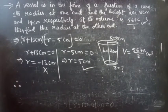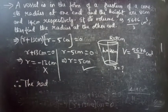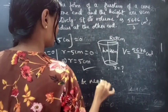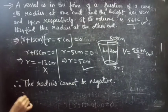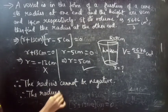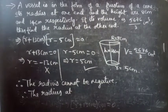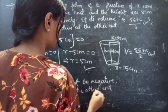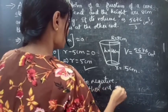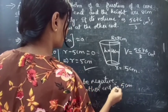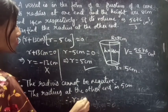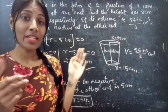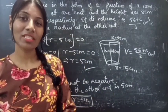Therefore, the radius at the other end is 5 cm. That is, small r = 5 cm. This completes the problem. We have seen a problem from mensuration in this video. Hope you understood. We'll see you in the next video — until then, bye bye.